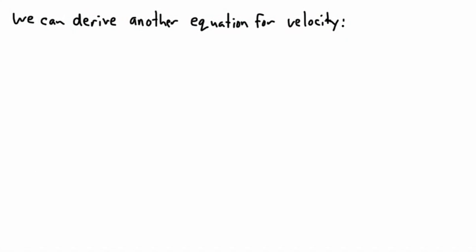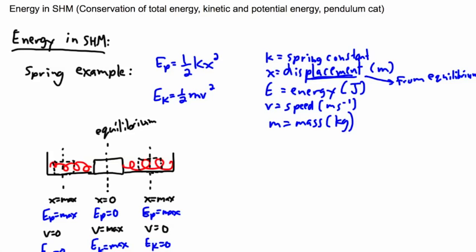We've been looking at how kinetic and potential energy work in simple harmonic motion. We had that the potential energy was half kx squared and the kinetic was half mv squared.